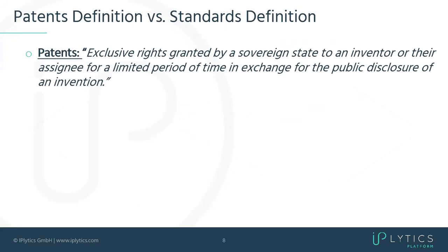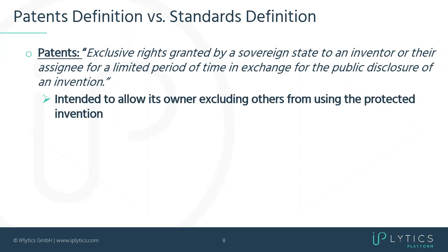Let's go one step back — what is a patent? A patent is an exclusive right granted by a sovereign state, meaning a patent office. You can have a European patent covering Europe, or a US patent from the USPTO. This gives the inventor an exclusive right for a limited period of time, typically 20 years. In exchange, you make your invention public. The main intent is to allow the owner to exclude others from using the protected invention.